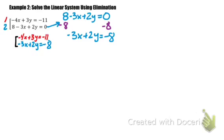Now I'm looking at my system, and I don't have anything that I can really cancel out. I'm going to select a variable, so I'm going to pick my x's to cancel out first. In order for me to cancel out my x's, I have a negative 4 and I have a negative 3. I'm looking for the greatest common factor between the two numbers. I'm going to multiply the first equation by a positive 3 and the second equation by a negative 4.